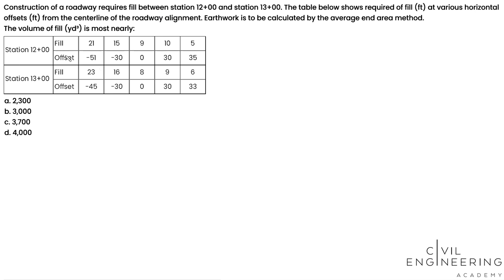Here is the table we just talked about. It shows the fill required for station 12+00 and station 13+00. For each station, the first row represents the fill required so that the finished surface of the roadway will be horizontal, and the second row is the offset away from the center line of the roadway.